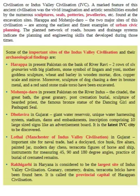A marked feature of this ancient civilization was the vivid imagination and artistic sensibilities exuded by the numerous sculptures, seals, potteries, and jewelleries found at the excavation sites. Harappa and Mohenjo-daro, the two major sites of this civilization, are among the earliest and finest examples of urban civic planning. The planned network of roads, houses, and drainage systems indicate the planning and engineering skills that developed during those times.